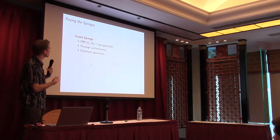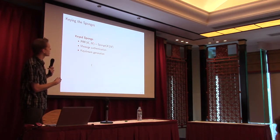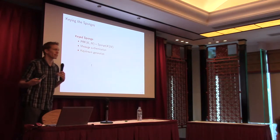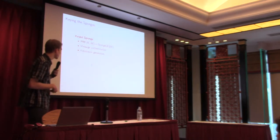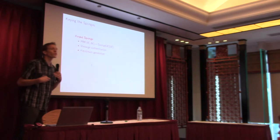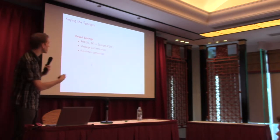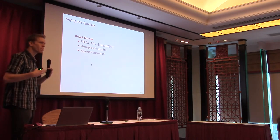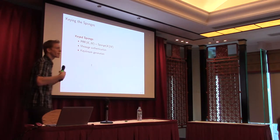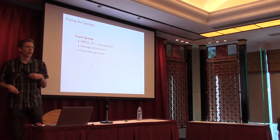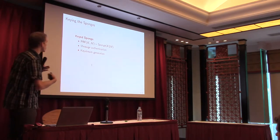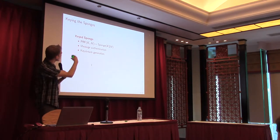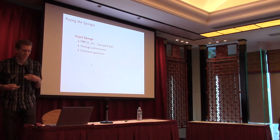This is what we call the keysponge. It takes input the key and the message, concatenates them, and you have a PRF. You can use it for message authentication. You can also use it for key stream generation: if instead of the message you take a nonce and produce a variable-length output, you can use this output as a key stream and encrypt your data. But in many applications you need both authentication and encryption, and in that setting the sibling is the key duplex, which is used for authenticated encryption.